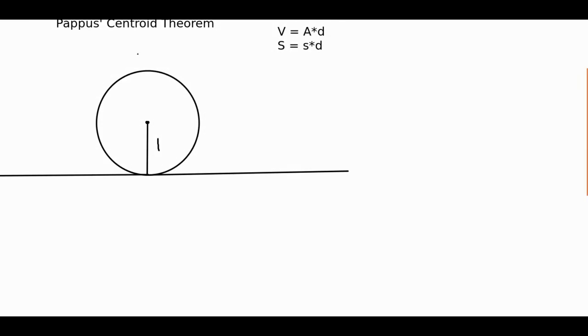Hello everybody, in this video I'm going to be talking about Pappus' Centroid Theorem, which allows us to easily find the volume and surface area of arbitrary objects that we rotate around a line.